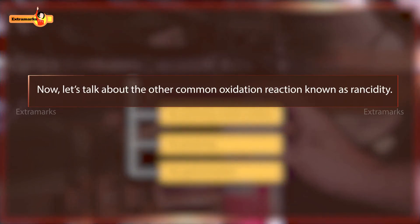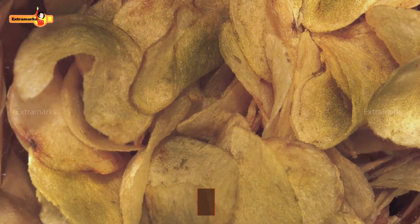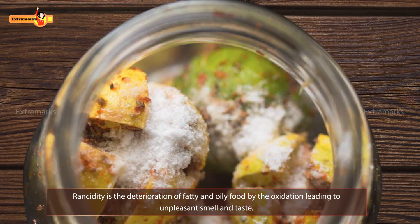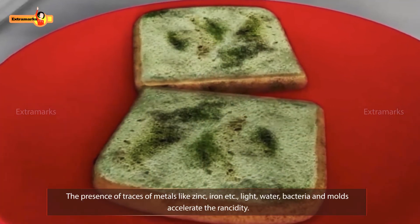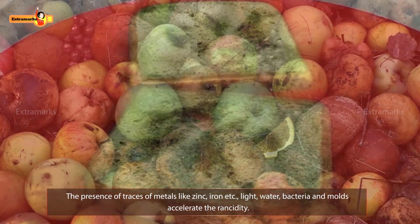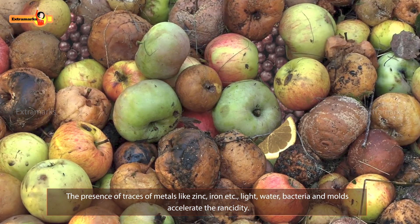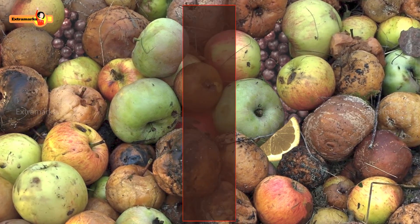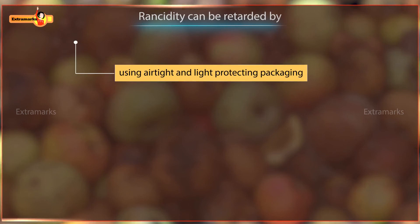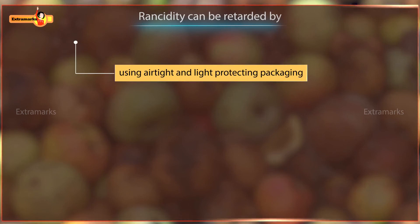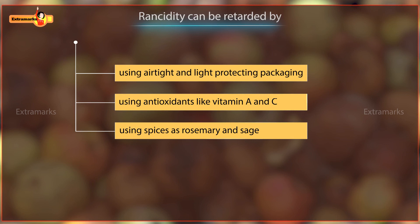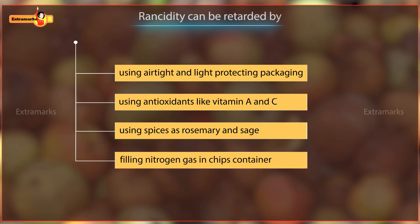Now let's talk about the other common oxidation reaction known as rancidity. Rancidity is the deterioration of fatty and oily food by oxidation, leading to unpleasant smell and taste. Presence of traces of metals like zinc and iron, light, water, bacteria, and molds speed up the process of rancidity. Rancidity affects the quality of food, so it is essential to retard this process. It can be done by using airtight and light-protecting packaging, by using antioxidants like vitamin A and C, by using spices such as rosemary and sage, and by filling nitrogen gas in chip containers.